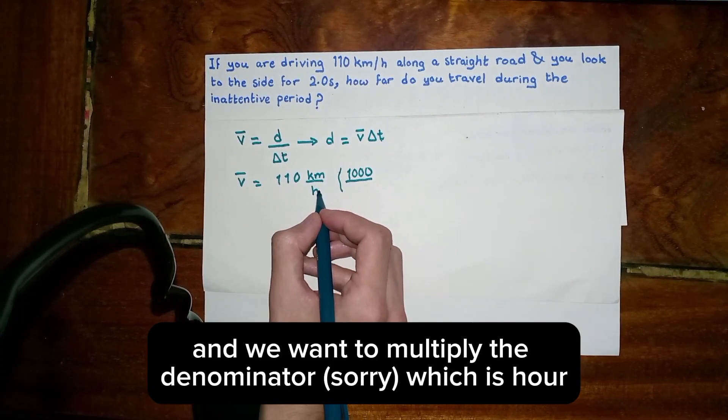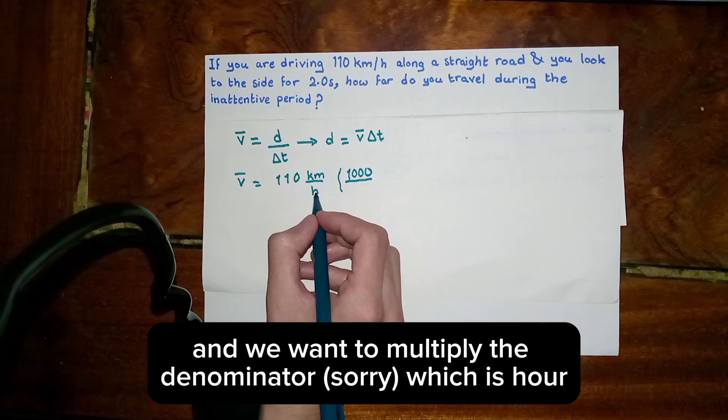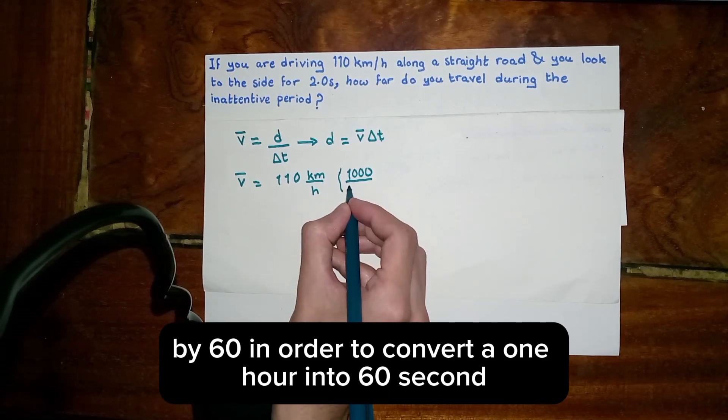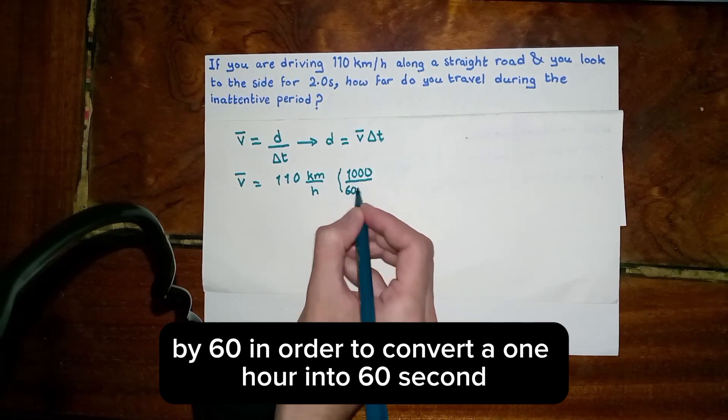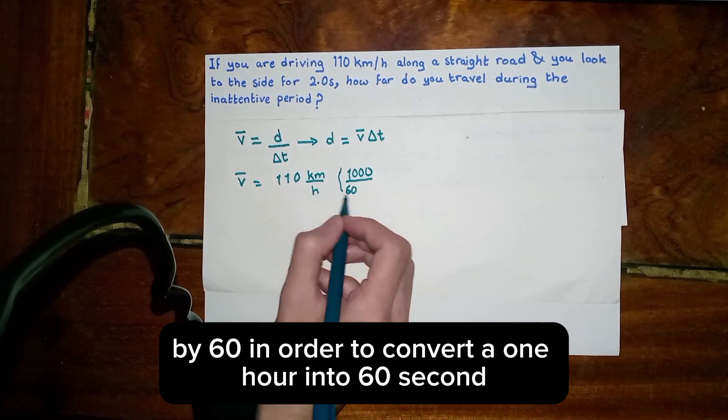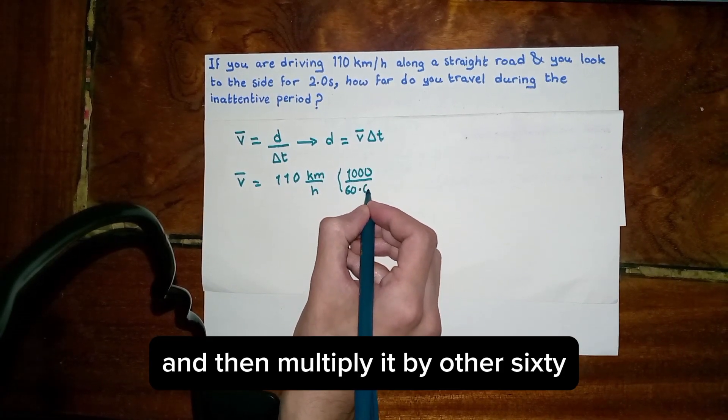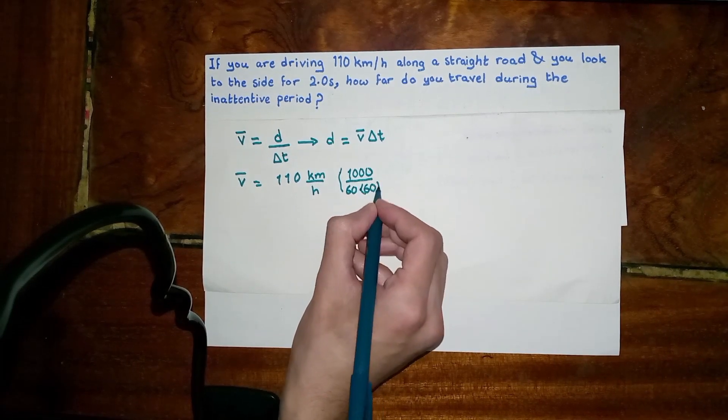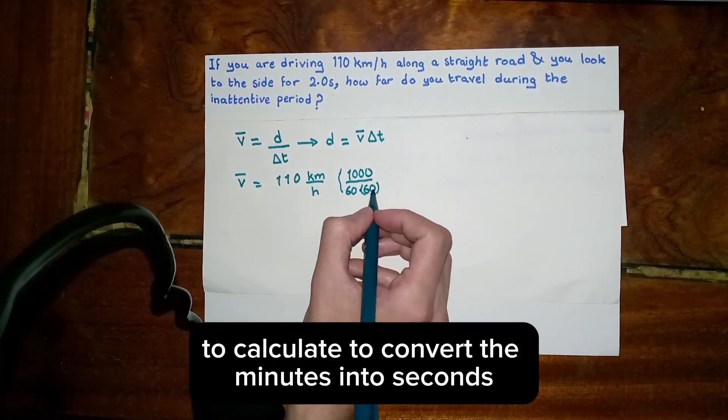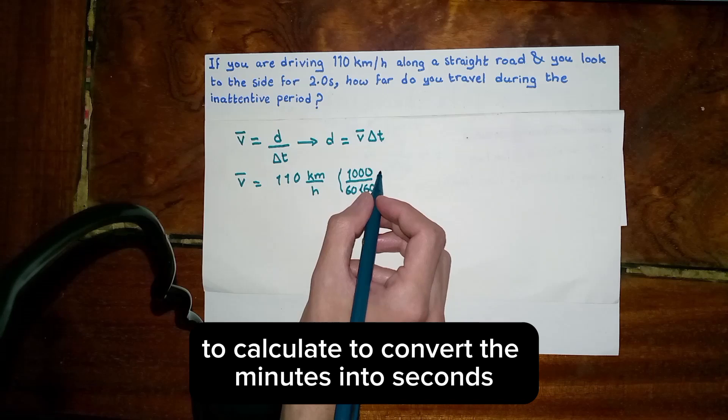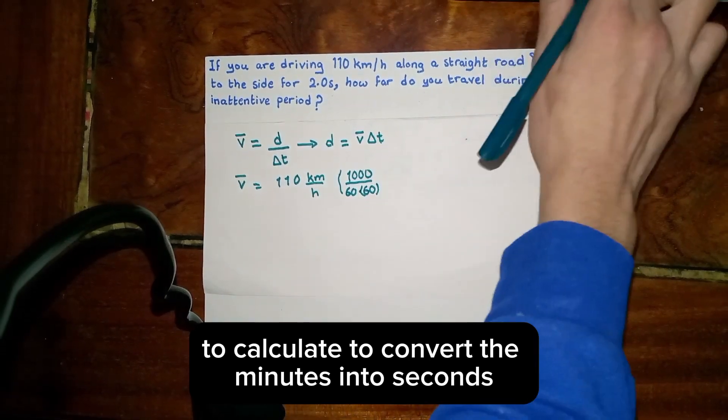And we want to multiply the denominator by 60 in order to convert one hour into 60 minutes, and then multiply it by another 60 to convert the minutes into seconds.